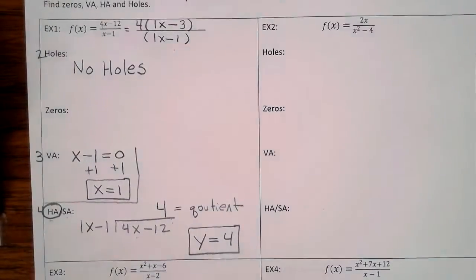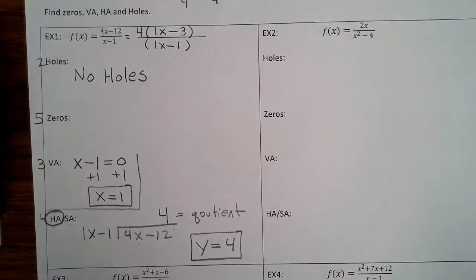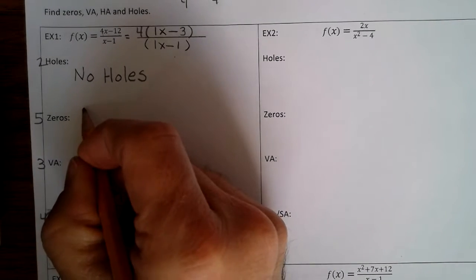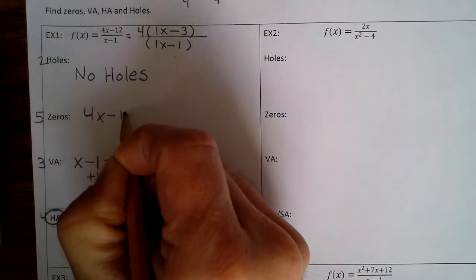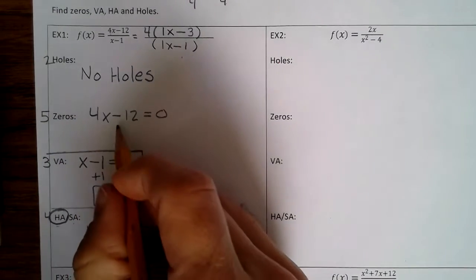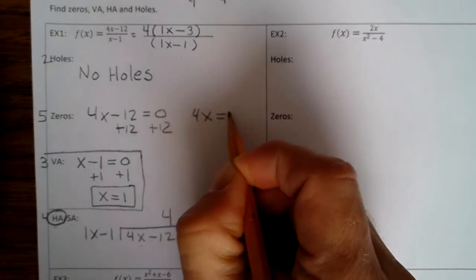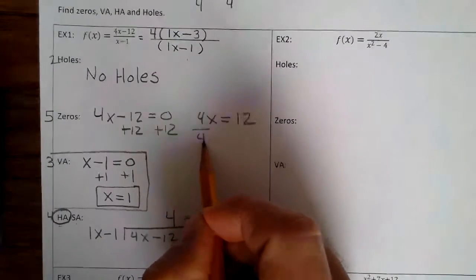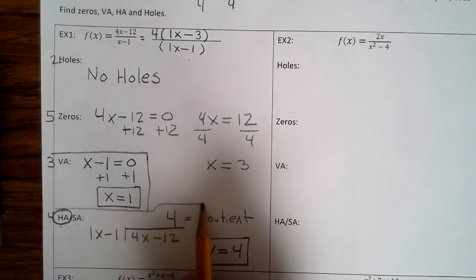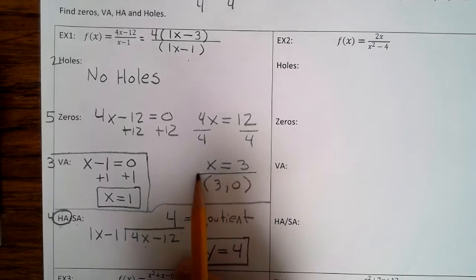The last step — step 5 — is to find the x-intercepts by setting the numerator equal to 0. So we set 4x minus 12 equal to 0. Add 12 to both sides: 4x equals 12. Divide both sides by 4: x equals 3. So we have an x-intercept at (3, 0). Finish up example 1.